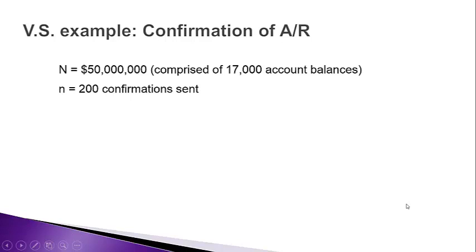Let's assume that we took a sample of 200. Little n represents sample size. So we went ahead and sent out 200 confirmations. We're going to make this simple and assume that all 200 confirmations came back — we didn't have to do any follow-ups.